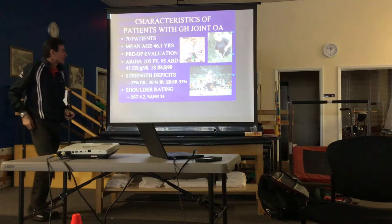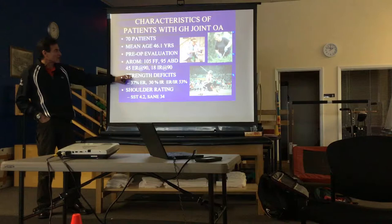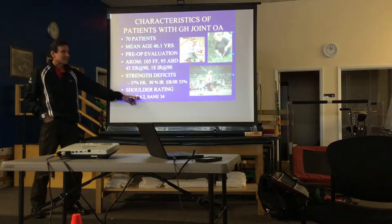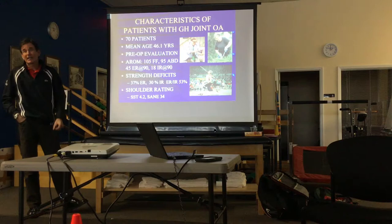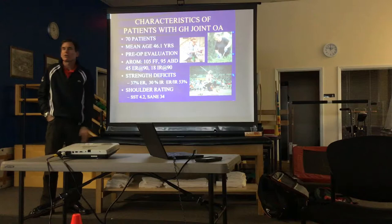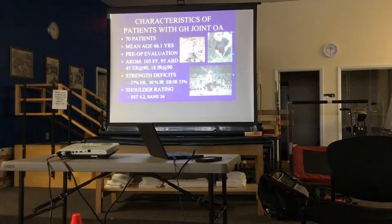Strength deficits are massive — about 30 to 40% decreases. The ER:IR ratio is terrible, only about half instead of 0.66. Their SST — Simple Shoulder Test — out of 12 questions, they only answer yes to four, usually the really simple ones. And their SANE — Single Assessment Numeric Evaluation — they feel their shoulder is 34 out of 100. These are people who are sore, painful, and at big risk of having their life quality ruined by a painful shoulder.